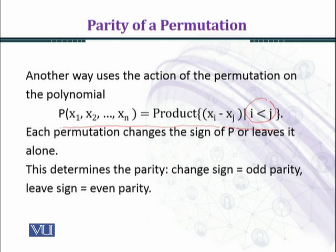In this theorem you have seen that the permutation has either even parity or odd parity. Both is not possible. And this is a very useful result. And you shall see that the set of all even permutations forms a group that is called the alternating group.